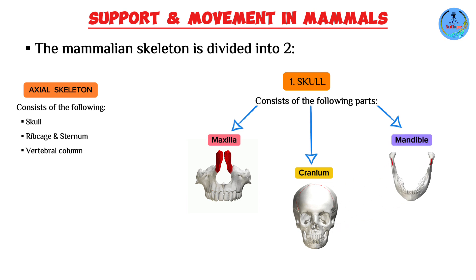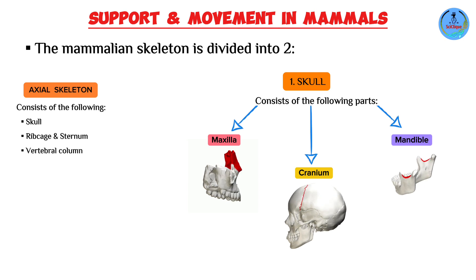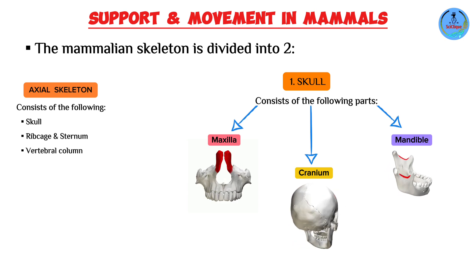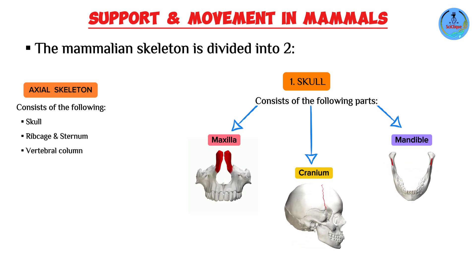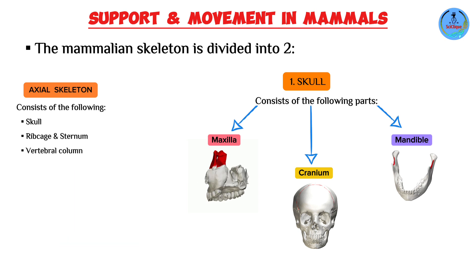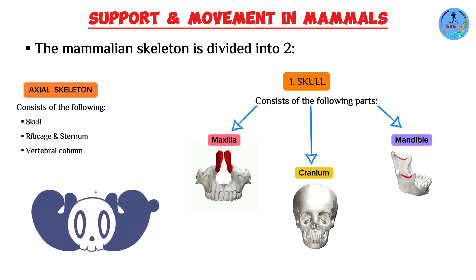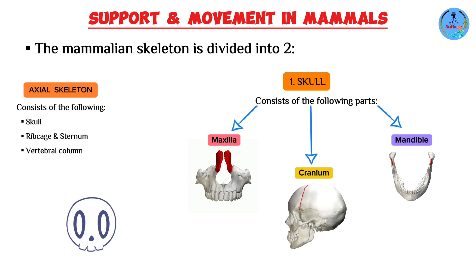The skull consists of the cranium, the upper jaw (also known as the maxilla), and the lower jaw (also known as the mandible). Looking at the cranium, you might mistakenly think it consists of one bone — it doesn't. It actually consists of 22 small bones that have been fused together permanently to create strong, immovable joints that provide maximum protection to important body organs.